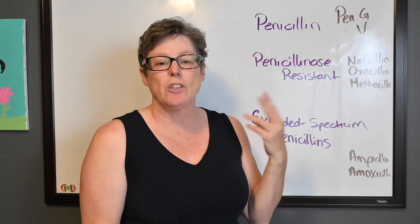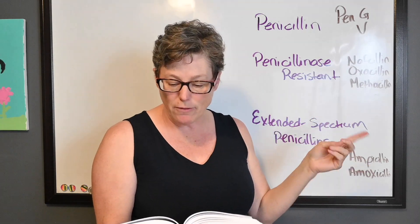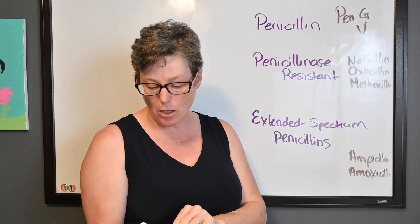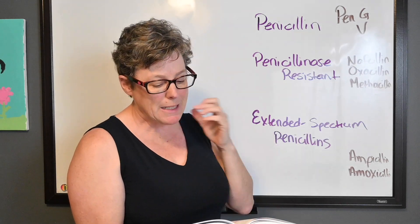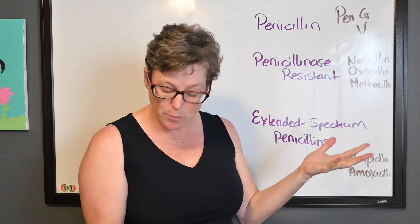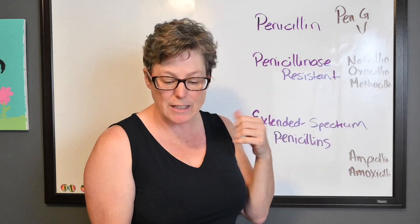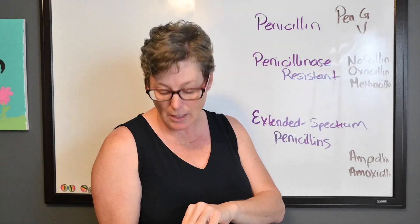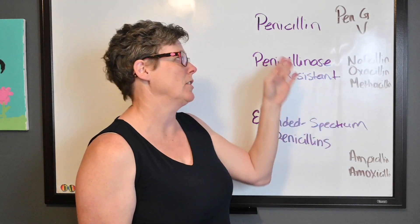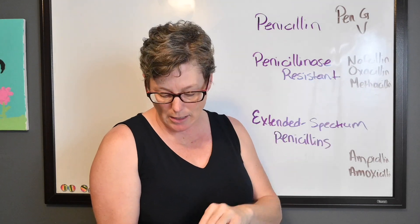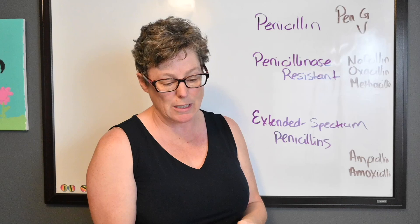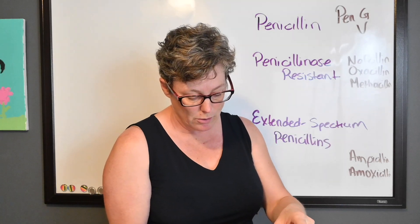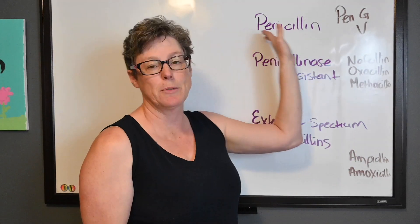Penicillin G benzathine is often used for syphilis and group A streptococcal upper respiratory infections. Penicillin G potassium is a natural penicillin used for anthrax, clostridial infections, diphtheria, syphilis, and serious streptococcal infections. Penicillin G procaine is used for bacterial endocarditis, diphtheria as an adjunct, rat bite fever, severe streptococcal complications, and syphilis. Syphilis appears across all pen G variants.